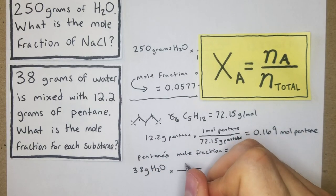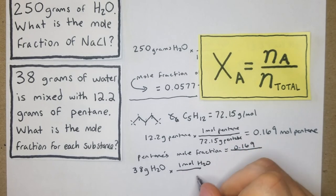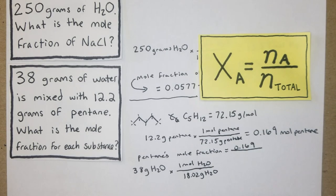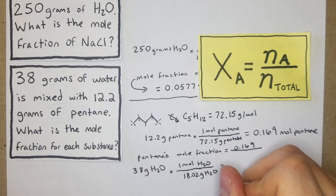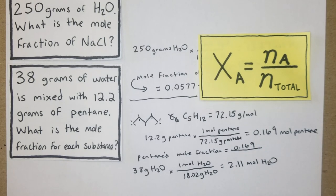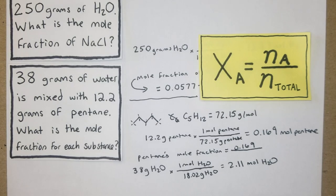Times one mole of H2O over 18.02 grams of H2O. We just do 38 divided by 18.02, which gives us 2.11 moles of water. Then for our total moles, it's going to be 2.11 plus 0.169.